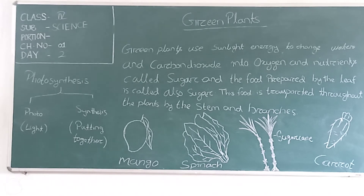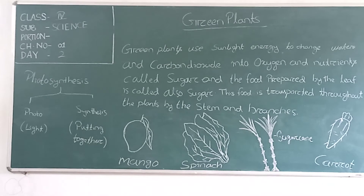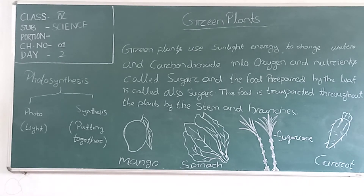The green plants use the sunlight energy to change water and carbon dioxide into oxygen and nutrients. Some nutrients are called sugar, and the food prepared by a leaf is called sugar. This food is transported throughout the plant by the stem and branches.